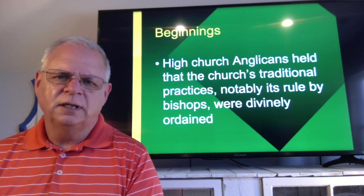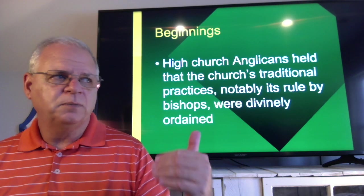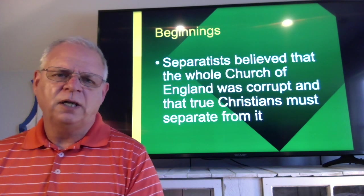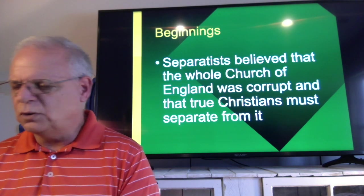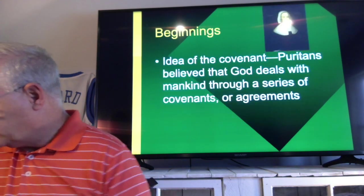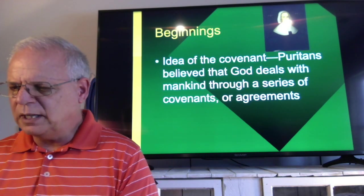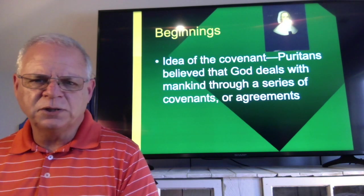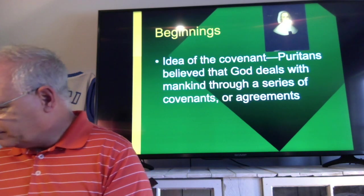Your high church Anglicans held that the church's traditional practices, notably its rule by bishops, were divinely ordained — that God established the Church of England that way. Then you had the Separatists, who believed the whole Church of England was corrupt and there was nothing to do other than separate from it and start over. Puritans who came to the New World followed the idea of the covenant — that God dealt with mankind through a series of covenants or agreements, and so they dealt with one another through covenants as well.